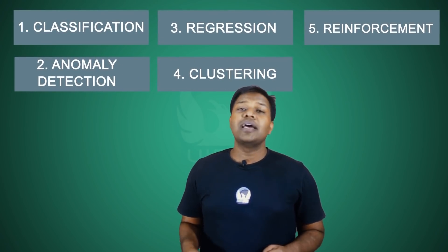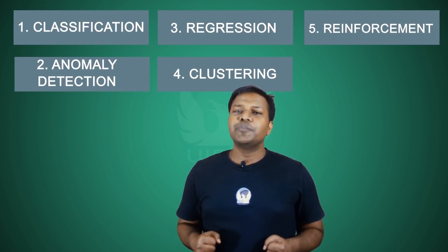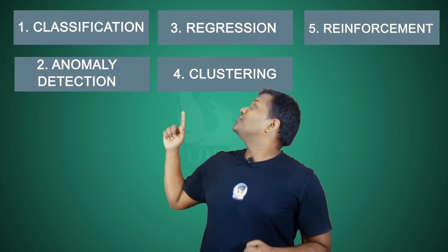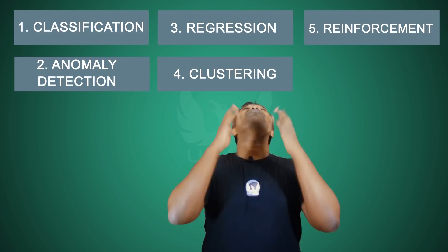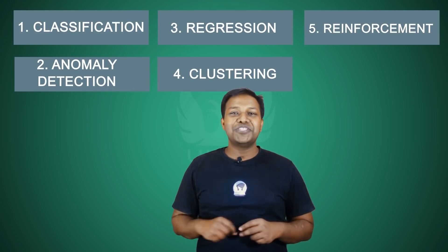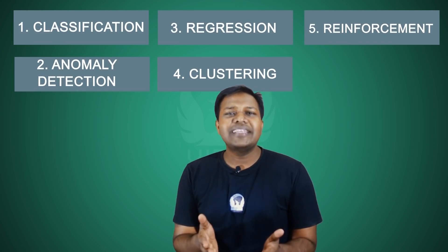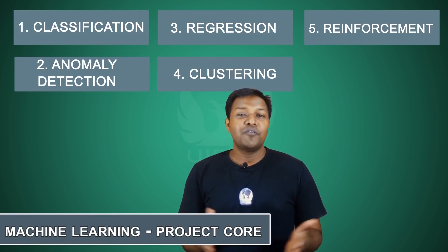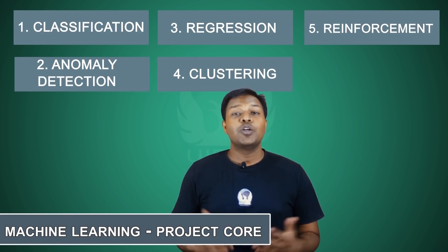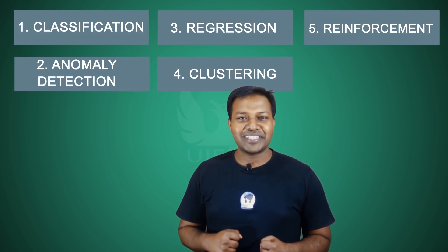To summarize, there are 5 different varieties of problems that can be formulated for a machine: classification, anomaly detection, regression, clustering, and finally reinforcement learning. There are so many things you can do with machine learning, and we'll be going into each one and looking at the algorithms that make it possible. Let's catch up in the next section to see the algorithm side of machine learning.